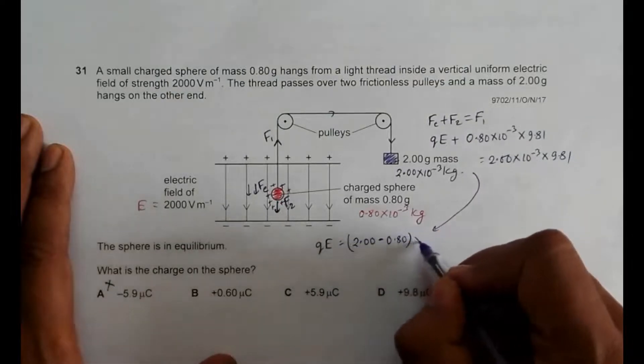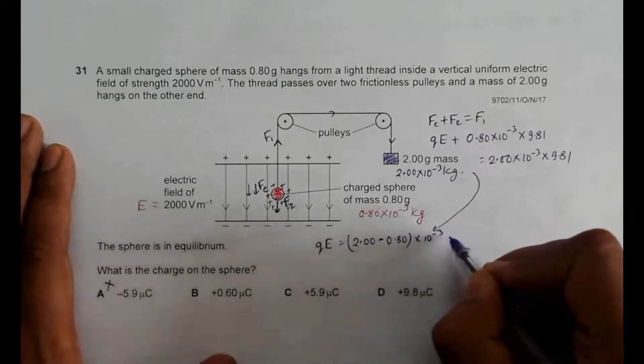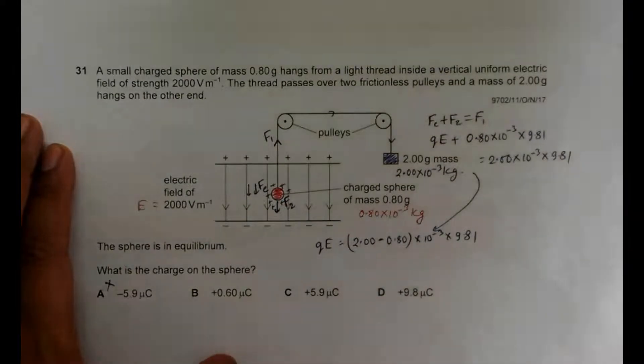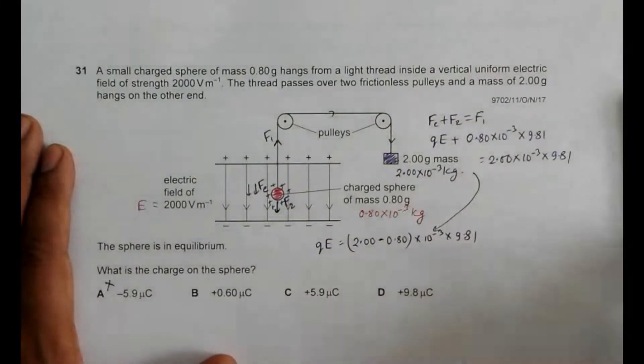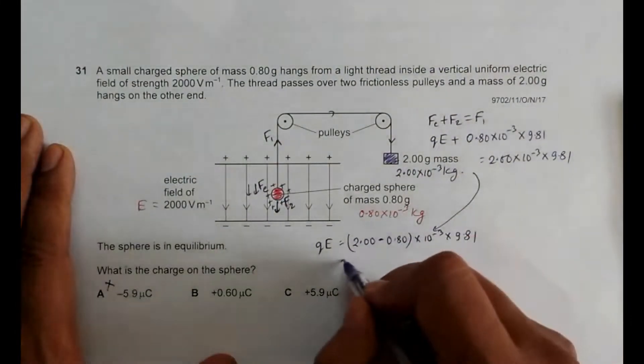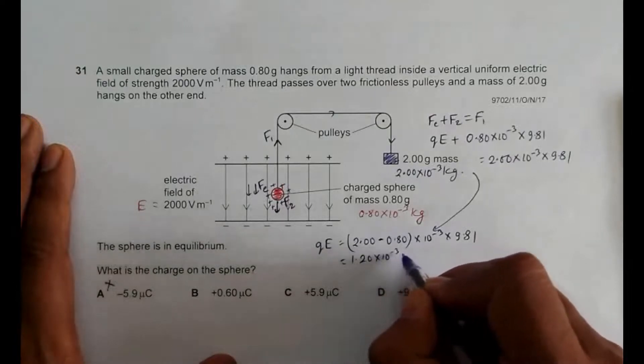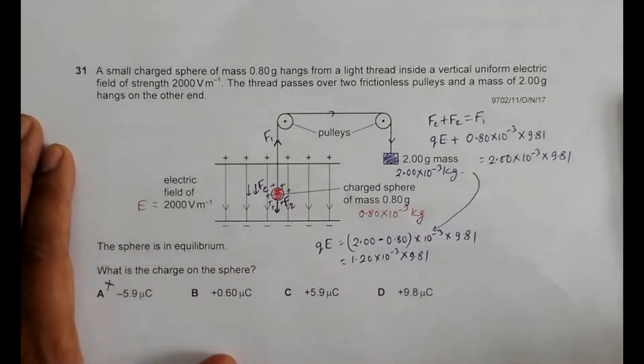So this will be equal to 1.20 into 10 to the power minus 3 into 9.81. So we will have this equal to, let me use the calculator, 1.2 exponent minus 3 into 9.81 is equal to